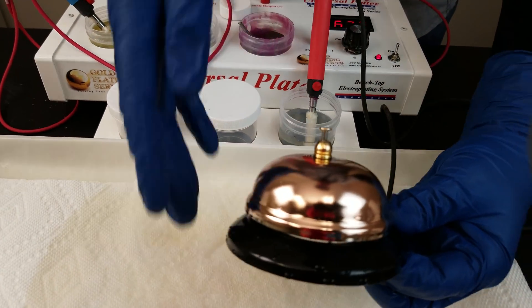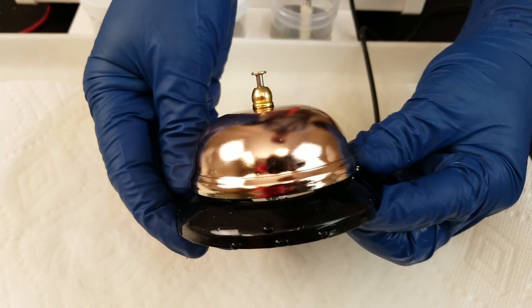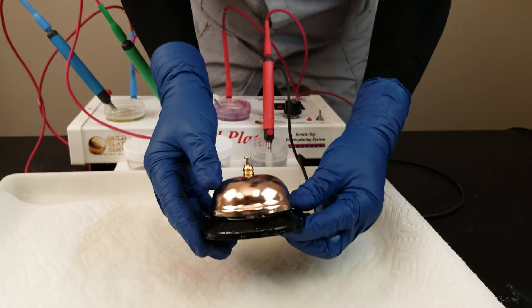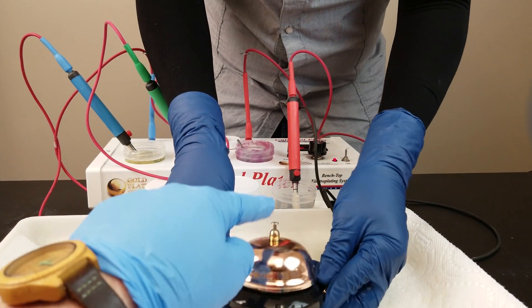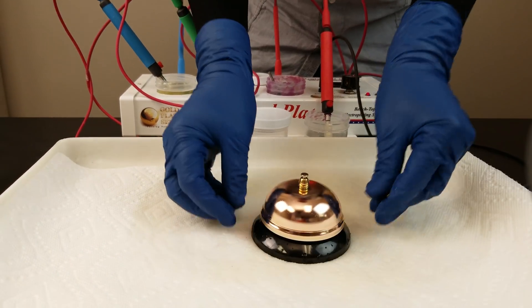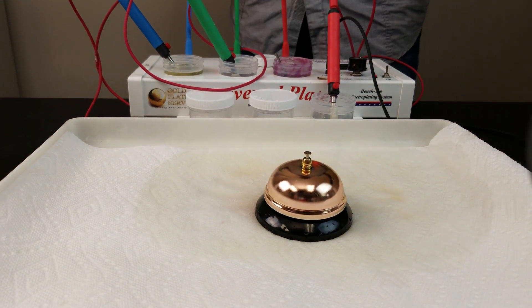And there you have it. I hope you can see the color of the rose gold. There's still a little bit of yellow gold on that stem to compare it to. And that's it. That's our rose gold plating solution for you.